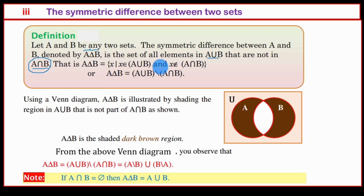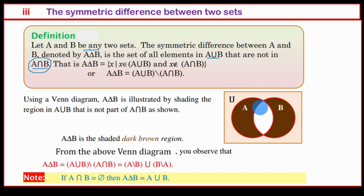So A delta B — we take A union B, and from that we remove the elements that are in A intersection B. That is, A union B minus A intersection B.